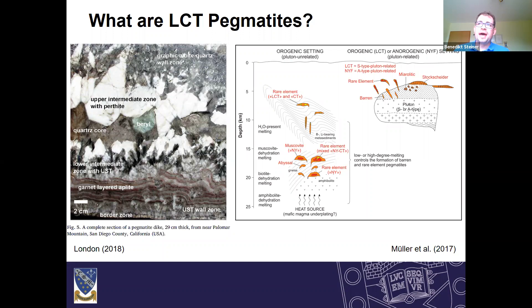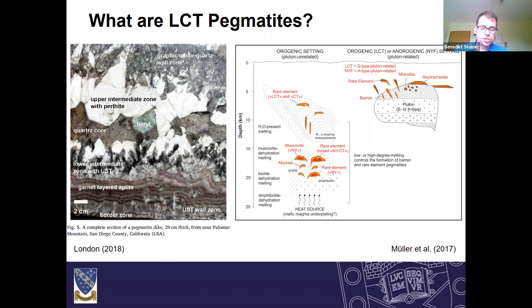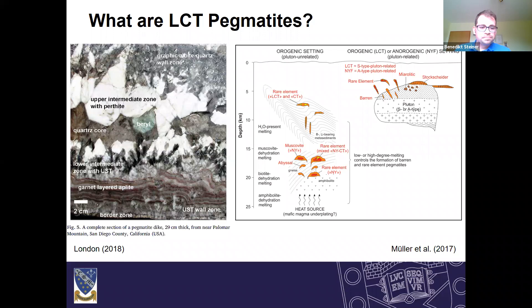So maybe we should start off quickly with defining what LCT Pegmatites are. LCT stands for lithium, cesium, tantalum. Pegmatites are very coarse crystalline rocks, characterized by an abundance of minerals that show skeletal, graphic, and other strongly directional growth habits. The Pegmatites are also characterized by prominent zonation — you can observe core zones, quartz core zones, intermediate zones, and wall zones — but it doesn't necessarily have to have zonation.